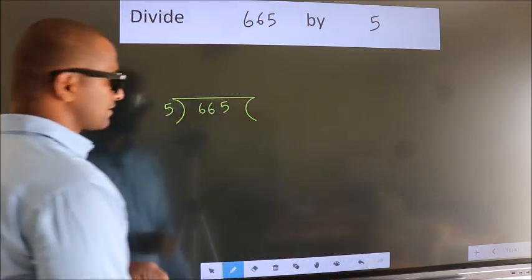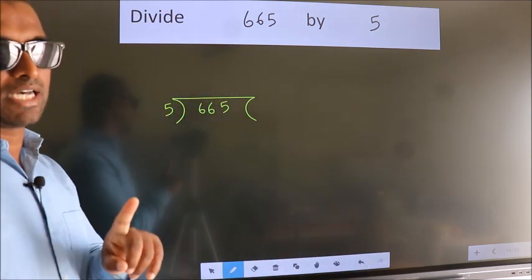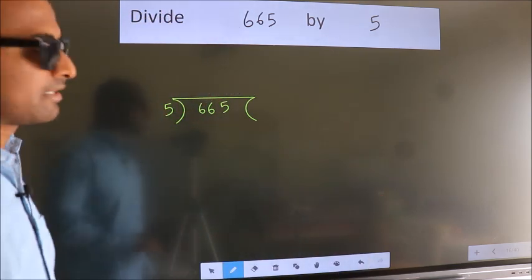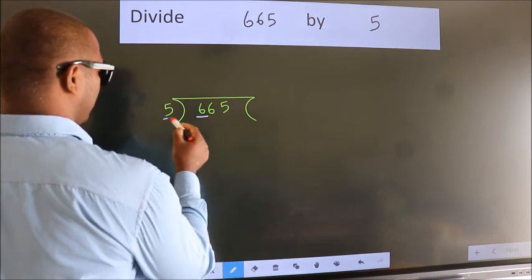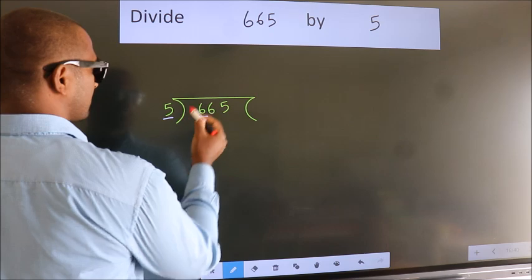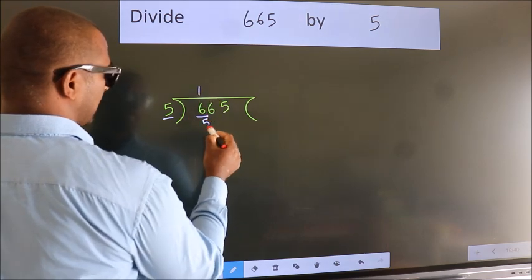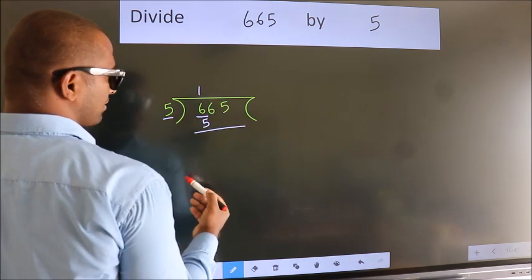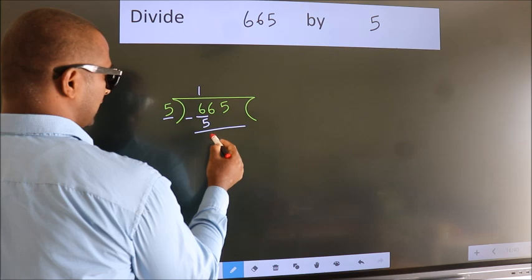This is your step 1. Next, here we have 6, here 5. A number close to 6 in the 5 table is 5 times 1 is 5. Now we should subtract. We get 1.